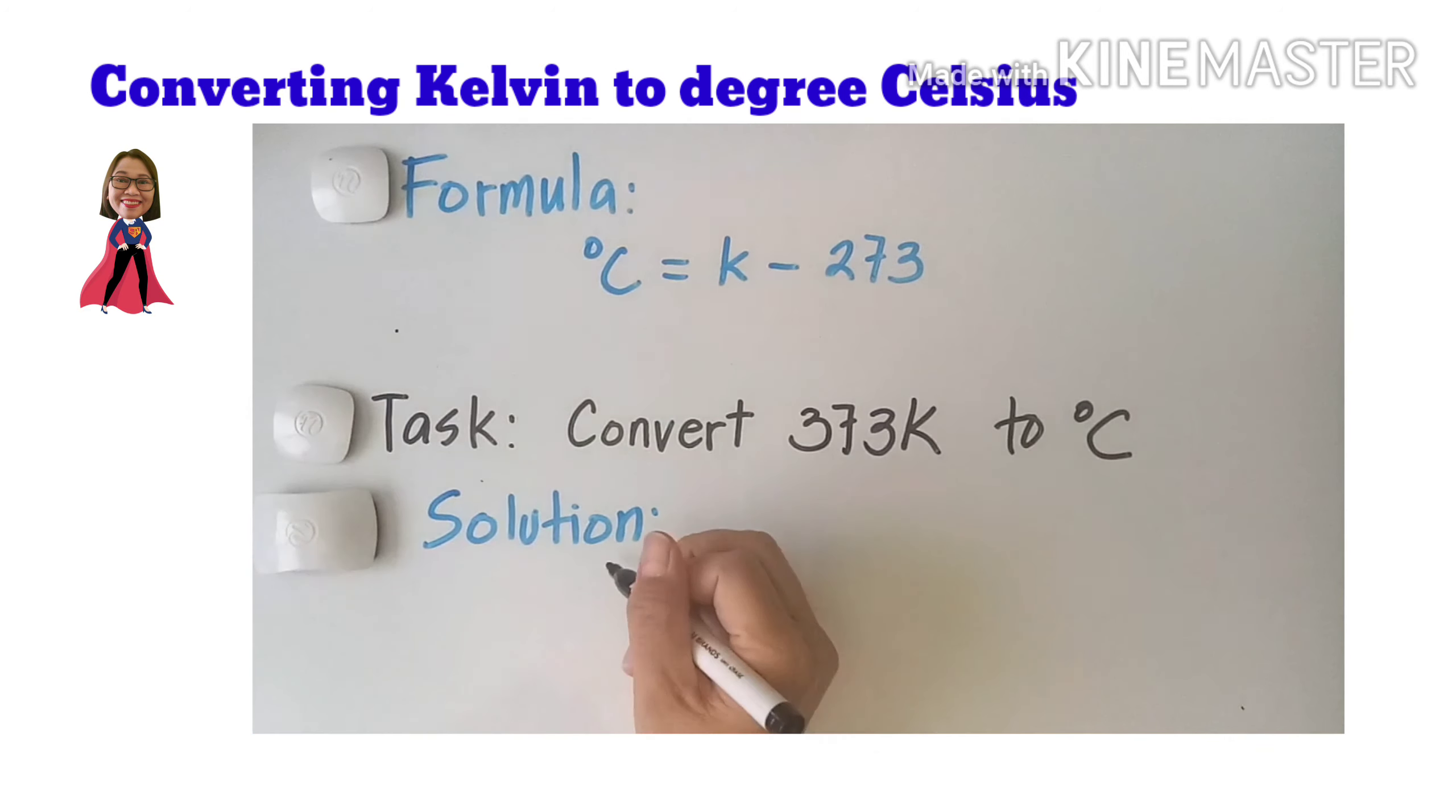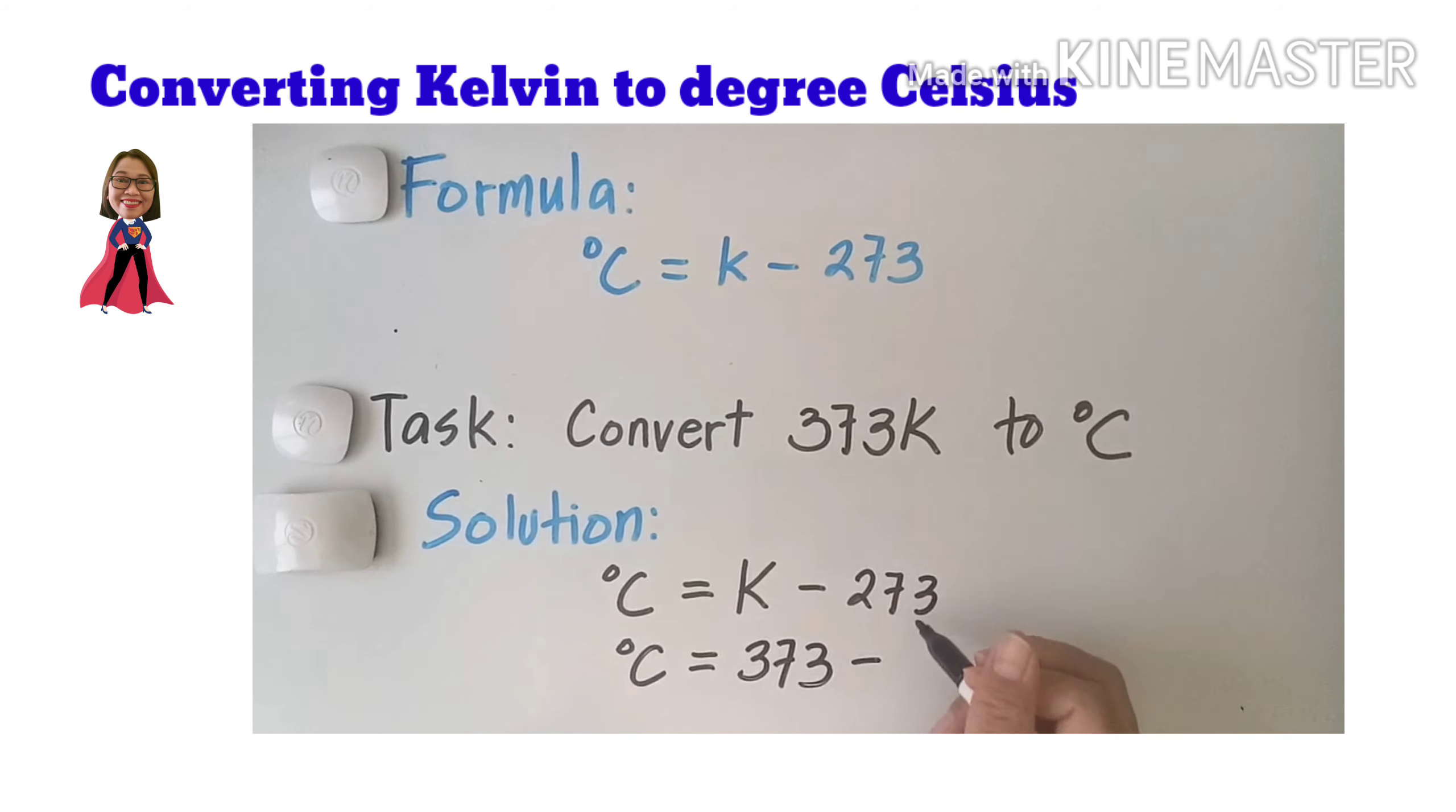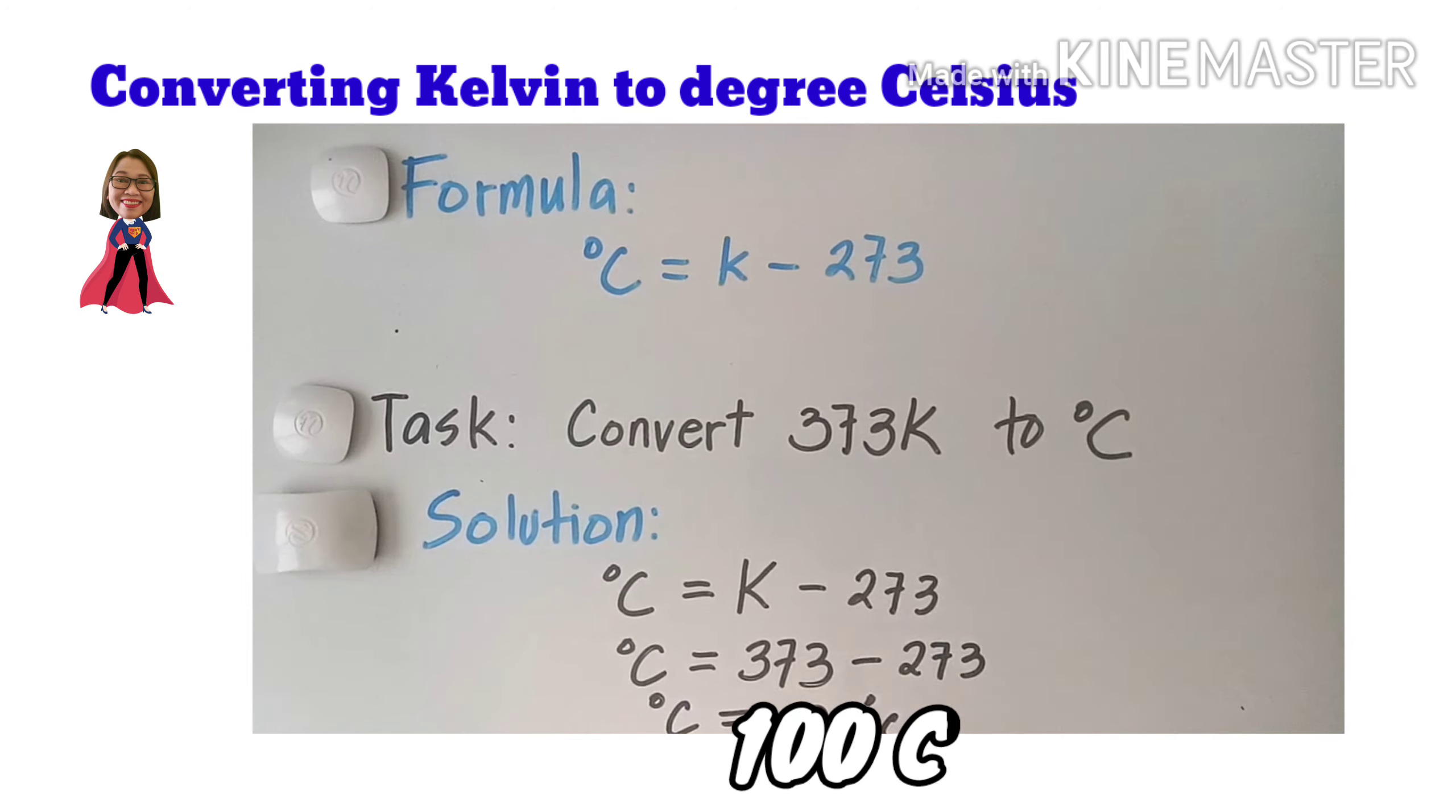So for the solution, let us copy first the formula. Degrees Celsius equals Kelvin minus 273. So degree Celsius is equal to 100 degrees. That means 373 Kelvin is equal to 100 degrees Celsius.